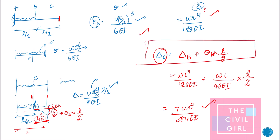This formula is very important because even if the UDL spans a different fraction — say L/3 with the remaining 2L/3 unloaded — you can still apply this method. So keep this formula in mind as far as deflection is concerned.